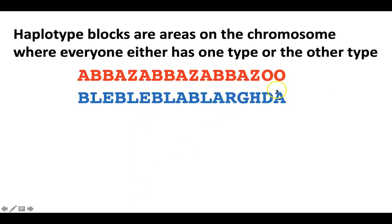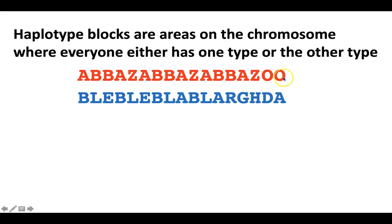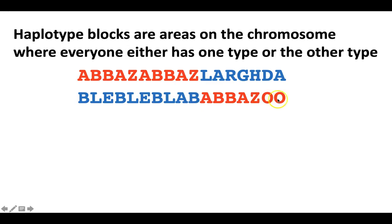Haplotype blocks are areas on the chromosome where everyone either has one type or the other type. Imagine we have two copies of the DNA code — one inherited from mom, one inherited from dad. As that child grows up and makes their own gametes, meiosis occurs and those chromosomes get mixed together, so some instructions on one chromosome copy will be from dad and some will be from mom. Those mixed chromosomes are what eventually become sperm cells or egg cells.